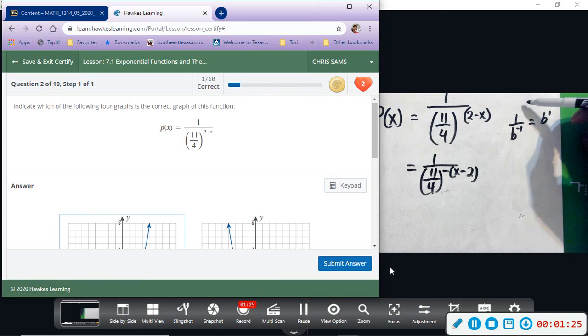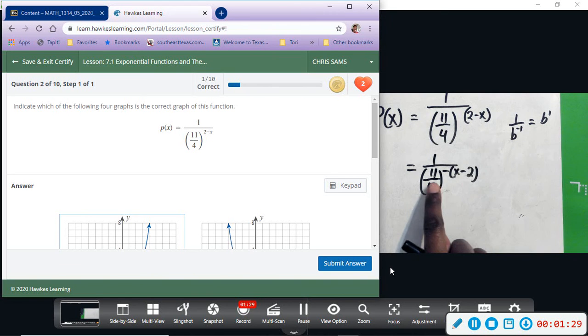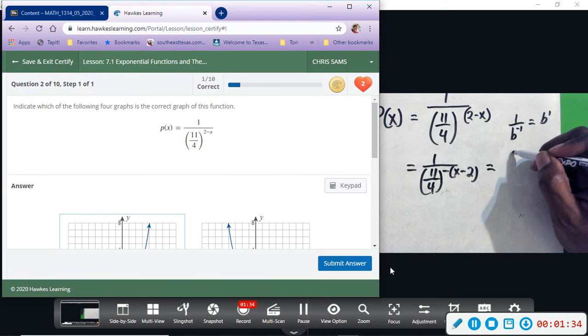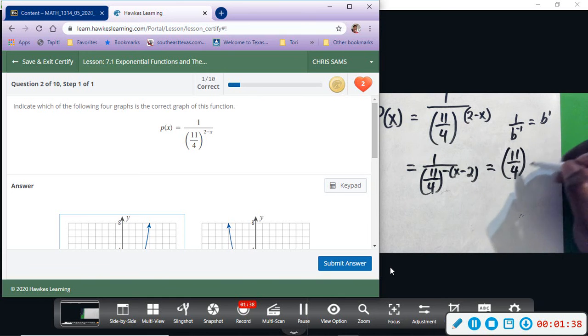And vice versa: if it was in the top with a negative exponent, we would move it down. So this function would get moved up and it would become eleven over four on the top, and then x minus two. From here you can see that eleven over four is bigger than one—this is still exponential growth.